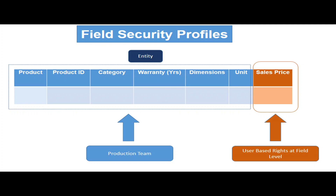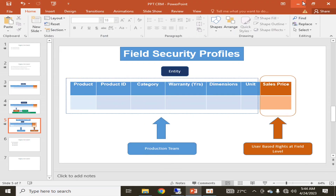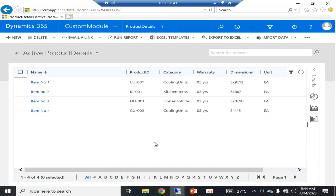There may be many scenarios where you can use field security profiles — essentially, defining distinct permissions at the field or attribute level. This is a shortcoming in Microsoft SharePoint, where you cannot define distinct permissions within one entity and third-party solutions are required. But in Dynamics, being a complete ERP package from Microsoft, we can use field-level security profiles natively.